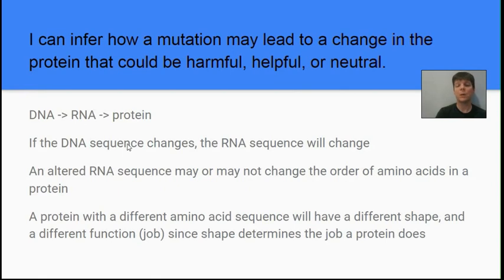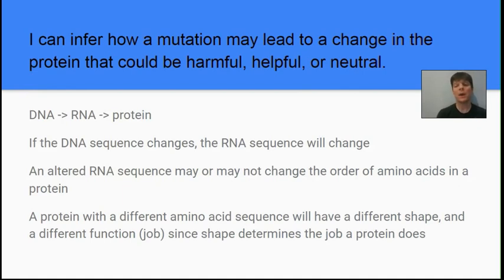If we have a DNA sequence that changes, the RNA sequence produced by transcription is also going to change. This can sometimes lead to no change in the protein — especially if it's the third base of a codon being changed — because many amino acids have multiple codons that give the same amino acid. So an RNA sequence change does not necessarily produce a change in the amino acid sequence of a protein. But sometimes it will — and if you do change the sequence of amino acids, you change the shape of that protein. Sometimes this produces a non-functioning protein, sometimes a protein that works differently, and sometimes no protein is built at all.